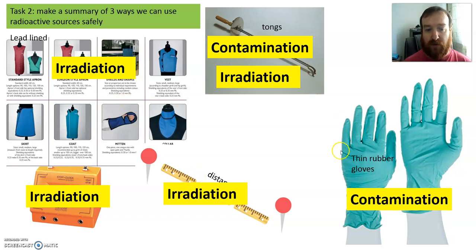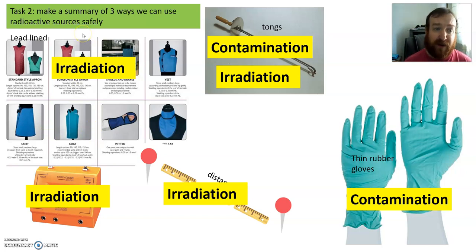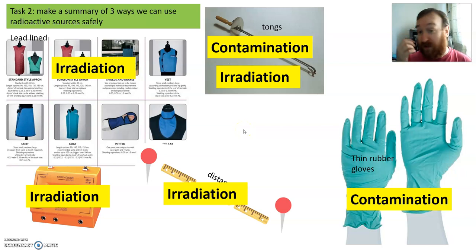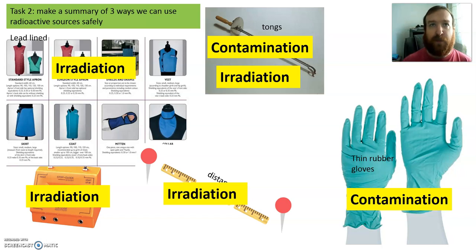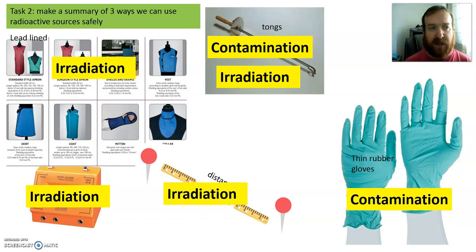You need to know some of the ways that scientists and teachers use radioactive sources safely. Your second task: make a summary of three ways we can use radioactive sources safely. Talk about three different ways we can use this equipment to be safe. You can make a little paragraph, a picture showing how you use the equipment, or a spider diagram with 'safety' in the middle. I want three different pieces of equipment or ideas. Pause the video here — spend no more than 10 minutes.